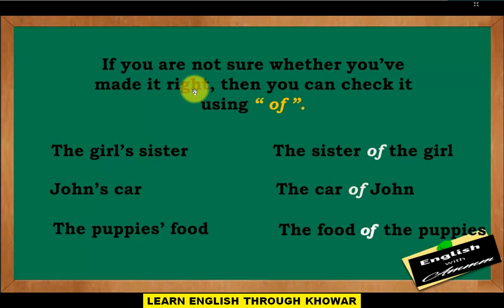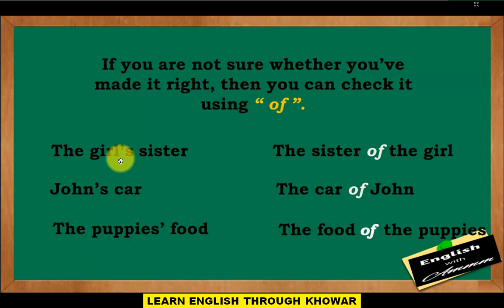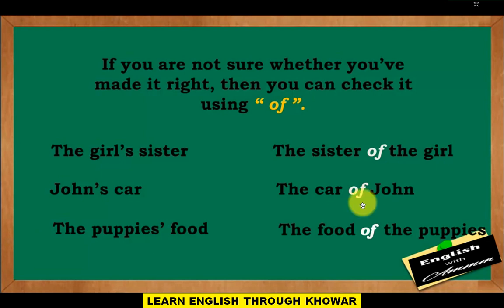If you are not sure about the apostrophe usage, you can check it by using the preposition 'of' instead. For example: 'The girl's sister' becomes 'the sister of the girl'; 'John's car' becomes 'the car of John'; 'The puppies' foot' becomes 'the foot of the puppies.'